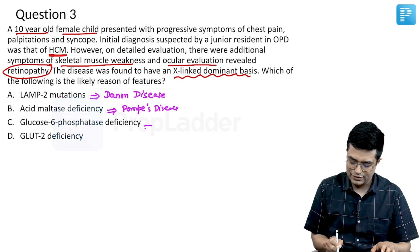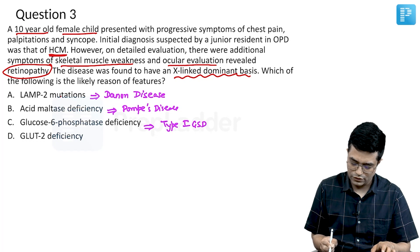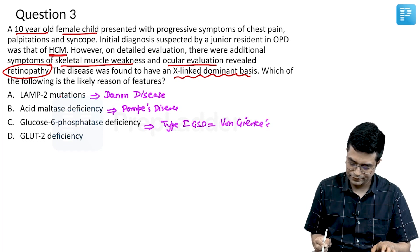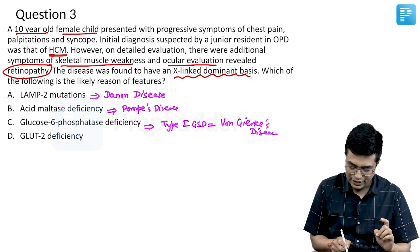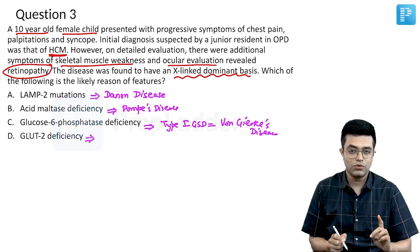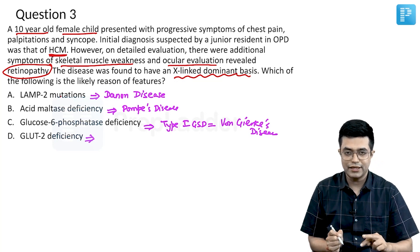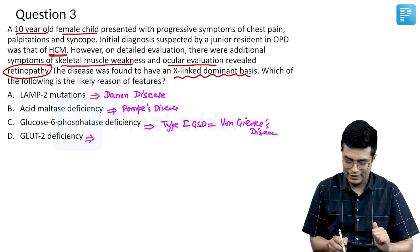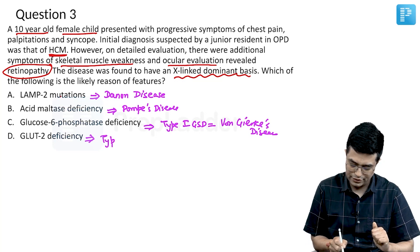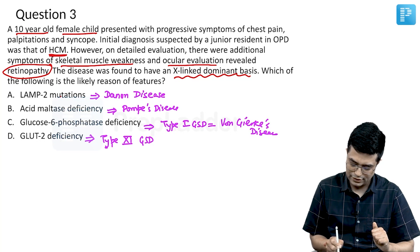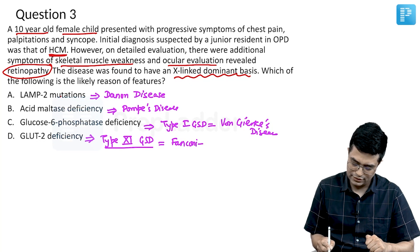Option C is the classic Von Gierke disease, that is type 1 glycogen storage disease. Option D, GLUT2 deficiency — the inborn error of metabolism associated with GLUT2 deficiency is type 11 glycogen storage disease, also called Fanconi-Bickel syndrome.